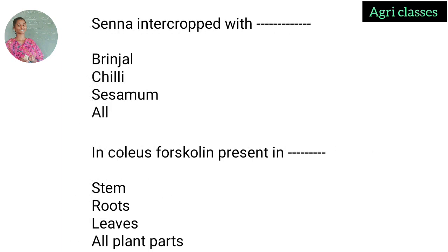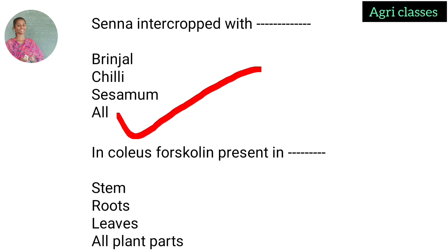Next question: Senna is intercropped with — wheat, brinjal, chili, sesame, or all of the above? The correct answer is all of the above. Senna can be intercropped with all those crops. After paddy cultivation, senna can also be grown.